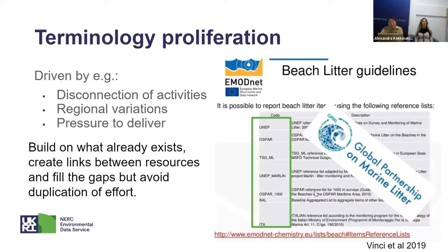Another challenge is the proliferation of terminologies, often driven by disconnection of activities, regional variations, and pressure to deliver. Here on the right hand side there is an example of beach litter guidelines, where there are many guidelines according to different regions and they don't fully overlap or align. The objects monitored are not the same everywhere in the world, making it very difficult to have a global assessment of the impact of beach litter. This is being resolved by establishing a global partnership that can help align existing content and ensure that future growth remains aligned so that global impact can be assessed.